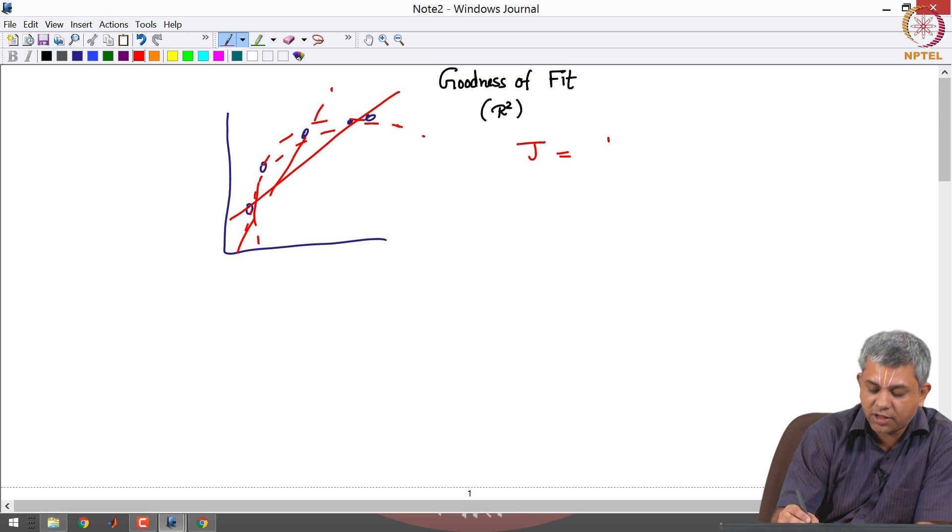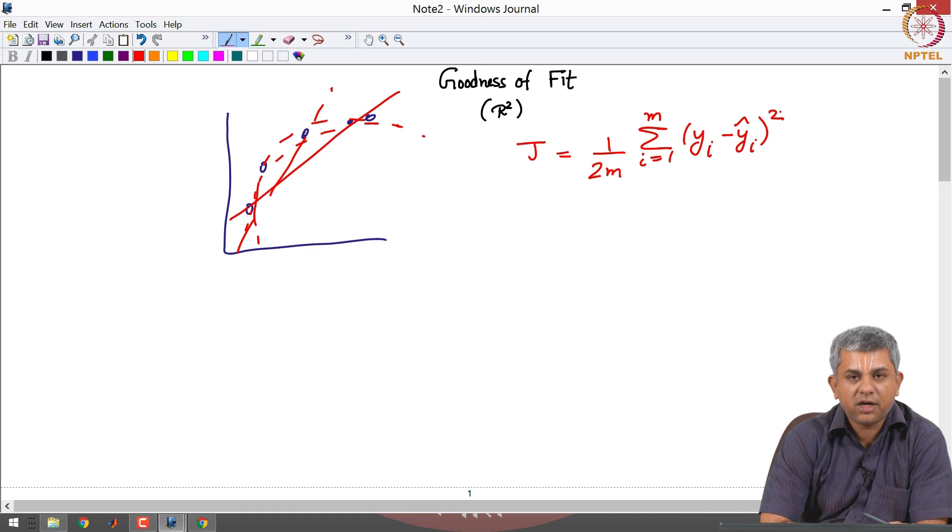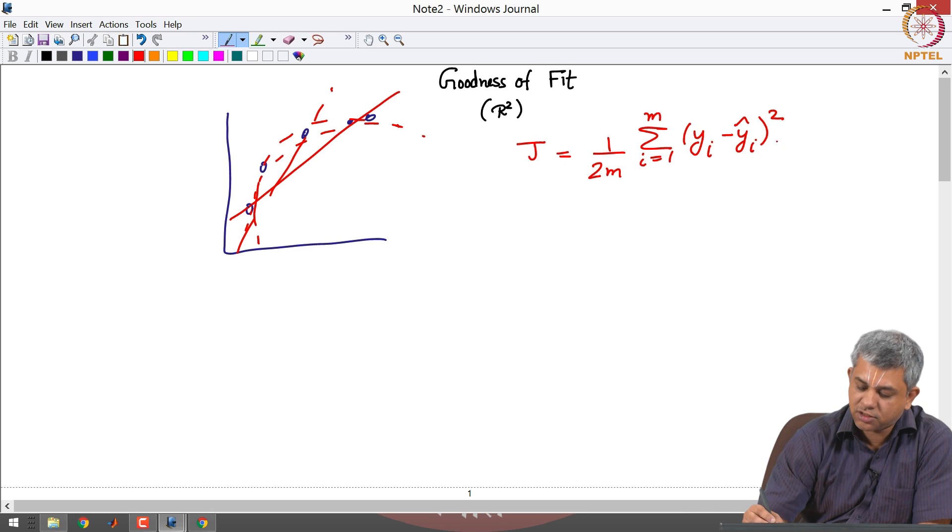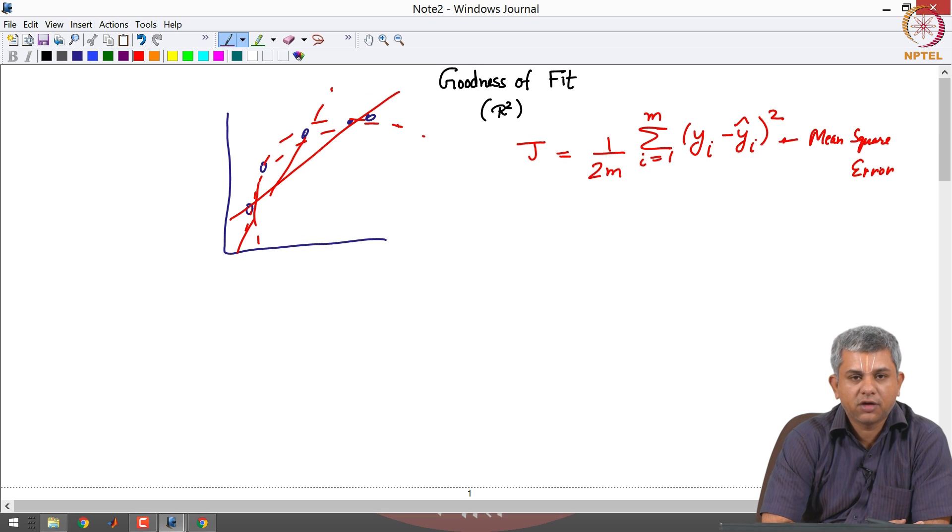And my J in that case was 1 by 2m sigma i equal to 1 to m, yi minus y hat i square. So basically this was mean square error. This is one measure of how good the fit is, but sometimes this is not a good enough measure for multiple reasons.